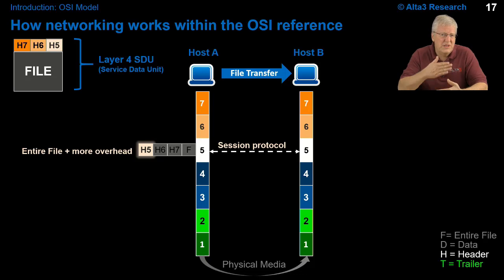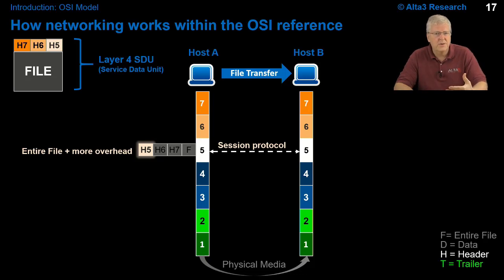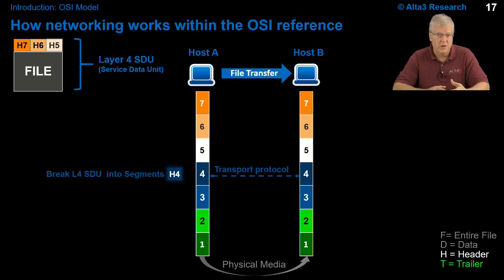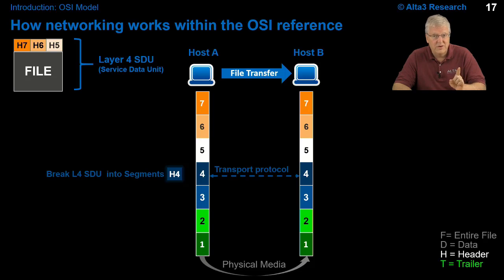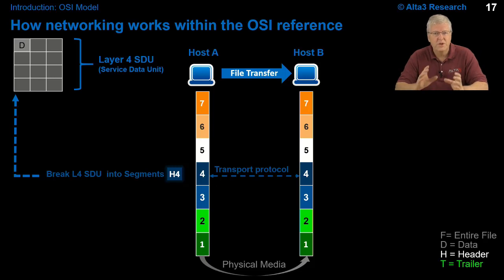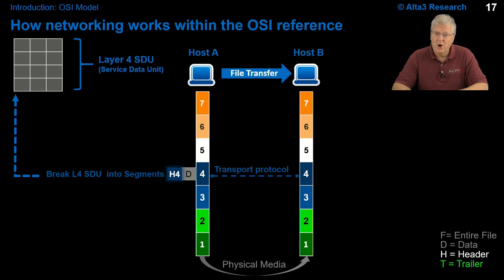Layer 5 is truly the borderline where application starts to turn into networking. Once the service data unit of layer 5 is passed down to layer 4, in this example we're talking TCP. Layer 4 says, wait — that's a really big file. The rest of the network can't handle something that large. So that file and all its overhead gets broken into a grid of segments. At layer 4, when you break data into those little pieces, we call each one a segment. Each segment is peeled out one at a time, the layer 4 overhead is added, and it's passed down to the next layer.